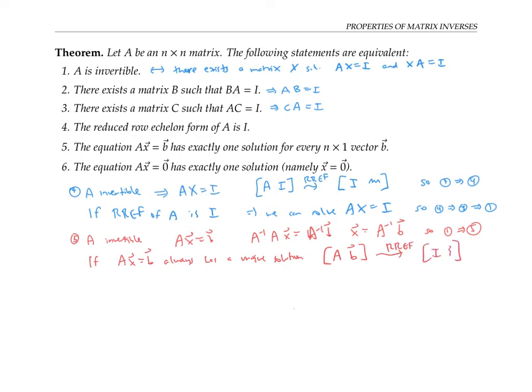And we've seen from previous work that that's four, that that implies one. So A being invertible is also equivalent to statement five.